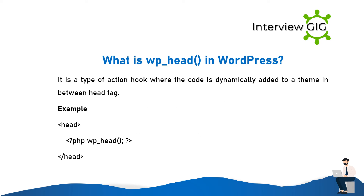What is wp_head in WordPress? It is a type of action hook where code is dynamically added to a theme between the head tags. Example: <head><?php wp_head(); ?></head>.